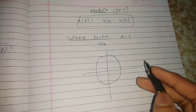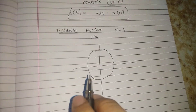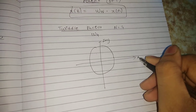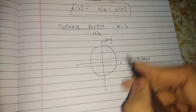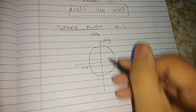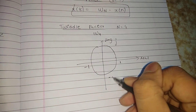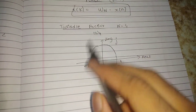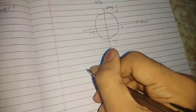The unit circle is already divided into four equal parts, so no modification is needed. The vertical axis is the imaginary part and the horizontal axis is the real part. Since the radius is 1, the real values are 1 and -1, and the imaginary values are +j and -j.